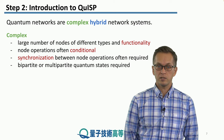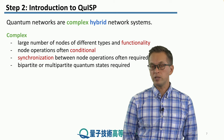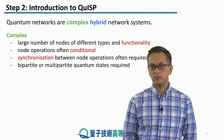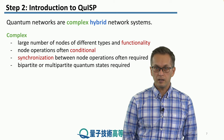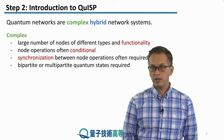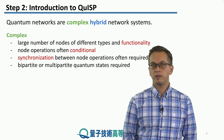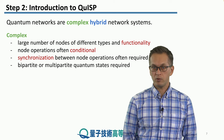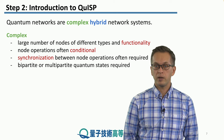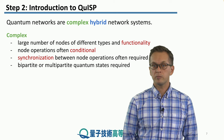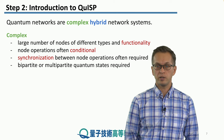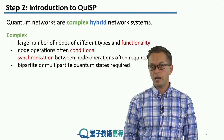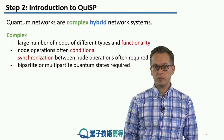Repeaters are designed to implement entanglement swapping. All of these operations, or most of them, are conditional. That adds to the layer of complexity. The operations of networks don't just depend on some pre-programmed routine, but actually depends on the outcomes of measurements or other operations, either at the node itself or at some other nodes in the network.